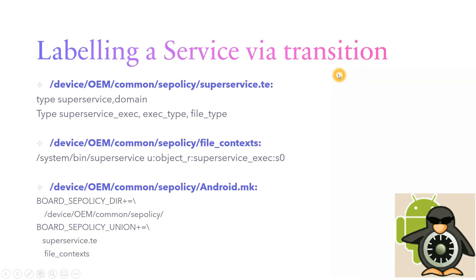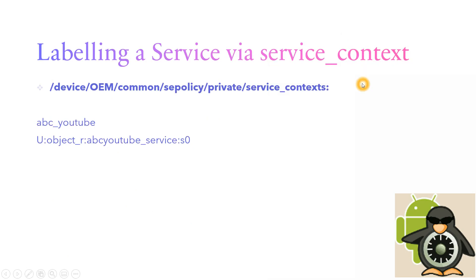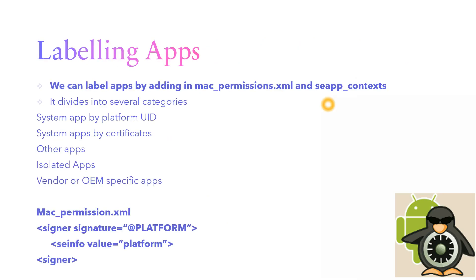Summary of the three methods: via transition is the normal preferred way for services. Use sec_label if you want the service to start when the device boots up. Use service_context if it's okay to start the service after the kernel is up.